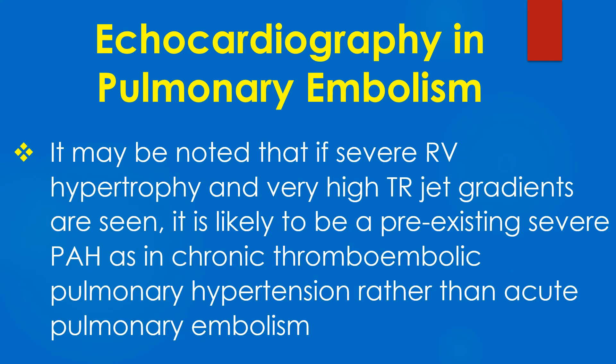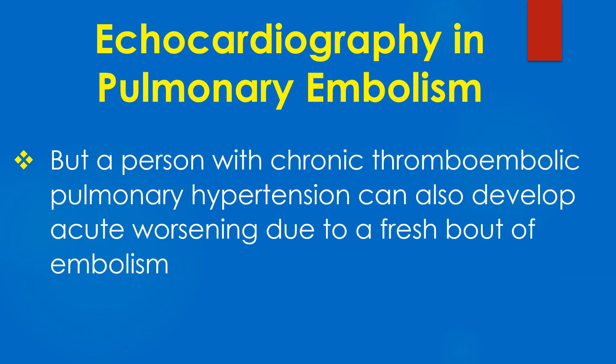It may be noted that if severe RV hypertrophy and very high TR jet gradients are seen, it is likely to be a pre-existing severe condition such as chronic thromboembolic pulmonary hypertension rather than acute pulmonary embolism. However, a person with chronic thromboembolic pulmonary hypertension can also develop acute worsening due to a fresh bout of embolism.